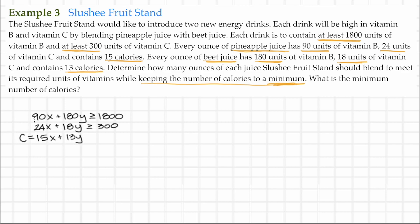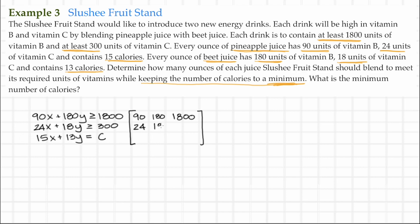Here's our objective function and constraints, rewritten to build a simple matrix. We'll put in 90, 180, and 1800 in the first row. This is not an augmented matrix or a tableau — it's a simple matrix we're going to transpose. We transpose to turn this minimization problem into its dual, which will be a maximization problem. Continuing the matrix: 24, 18, 300 in the second row, and 15, 13, 1 in the last row.